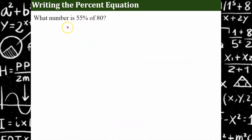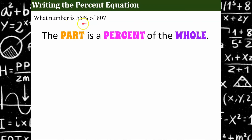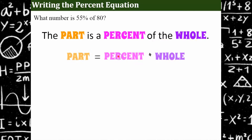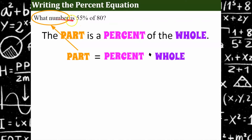So we're going to use the percent equation to solve this: what number is 55 percent of 80? We're going to use the idea that the part is a percent of the whole, remembering that part equals percent times whole. We just need to fill in all the blanks. What's the part? That's our unknown. The percent has the percent symbol — that's 55%. And 'of the whole' — the keyword 'of' signals that 80 is the whole.